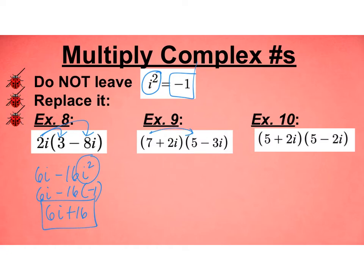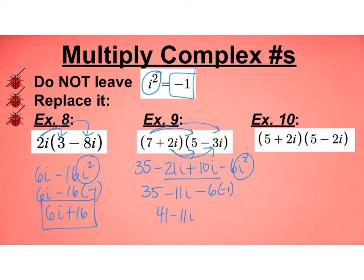We're going to do big distributive here. So we get 35 - 21i and then + 10i and -6i². I need to combine those and substitute in there. So we get 35 - 11i - 6 × (-1). So that becomes a positive 6. So we have 41 - 11i.